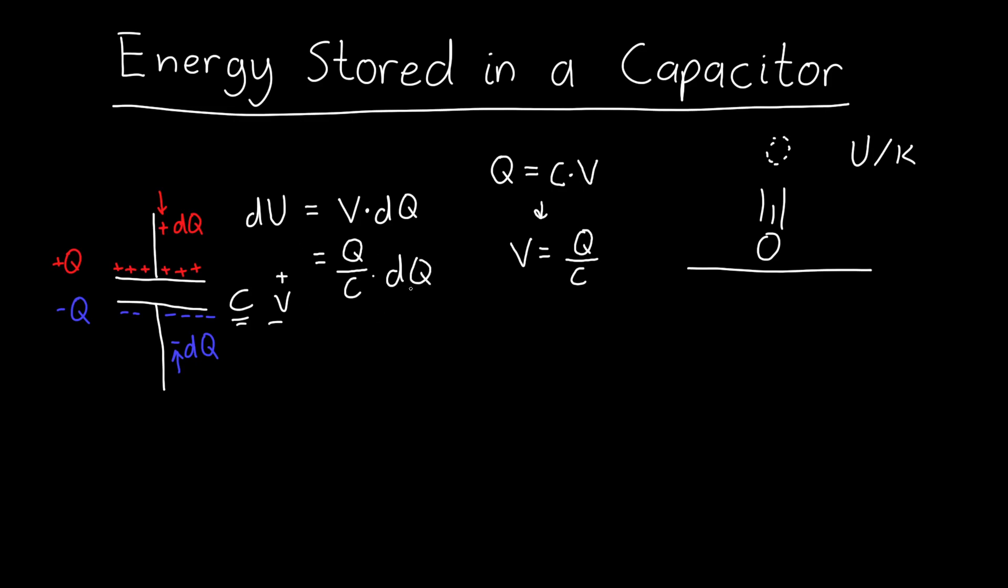And so this says exactly what we were saying before, that as we add more and more charge Q, it gets harder and harder. The energy cost goes up. So if I add a little bit of DQ when Q is very small, then the energy required is low. But when I add a little bit more charge when the total charge on the capacitor is high, then the energy cost is going to be much higher.